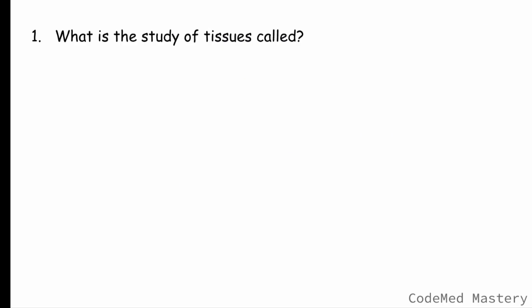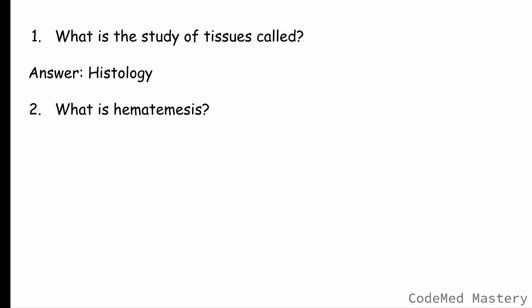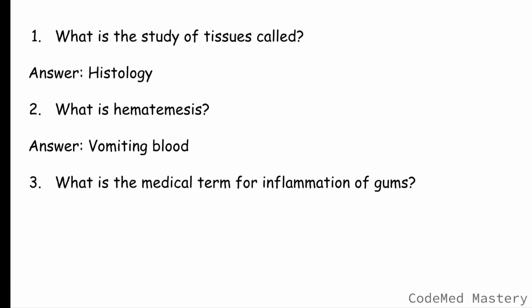First question: what is the study of tissues called? The study of tissues is known as histology. Next question: what is hematemesis? Hematemesis means vomiting blood. 'Hemat' refers to blood and 'emesis' refers to the process of vomiting.